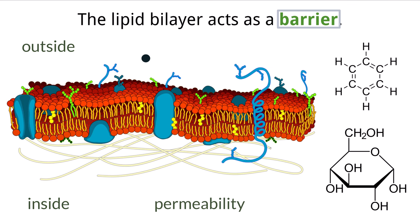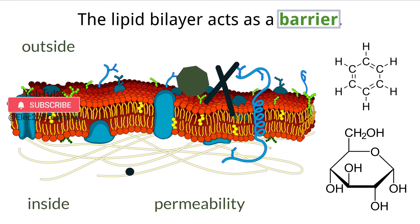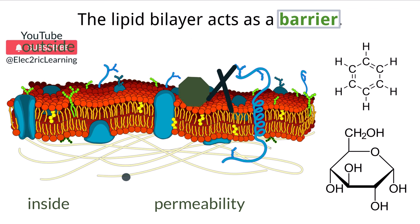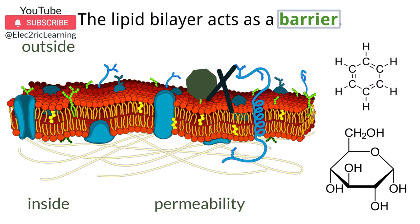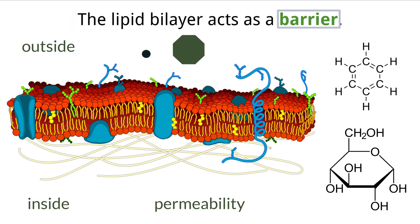We can say that the cell membrane is permeable to some things, meaning they can pass through the membrane with less difficulty, and non-permeable to other things, meaning they generally cannot make it through. From the substance's perspective, some substances have a high permeability, meaning they can move through easily, or low permeability, meaning they can't.